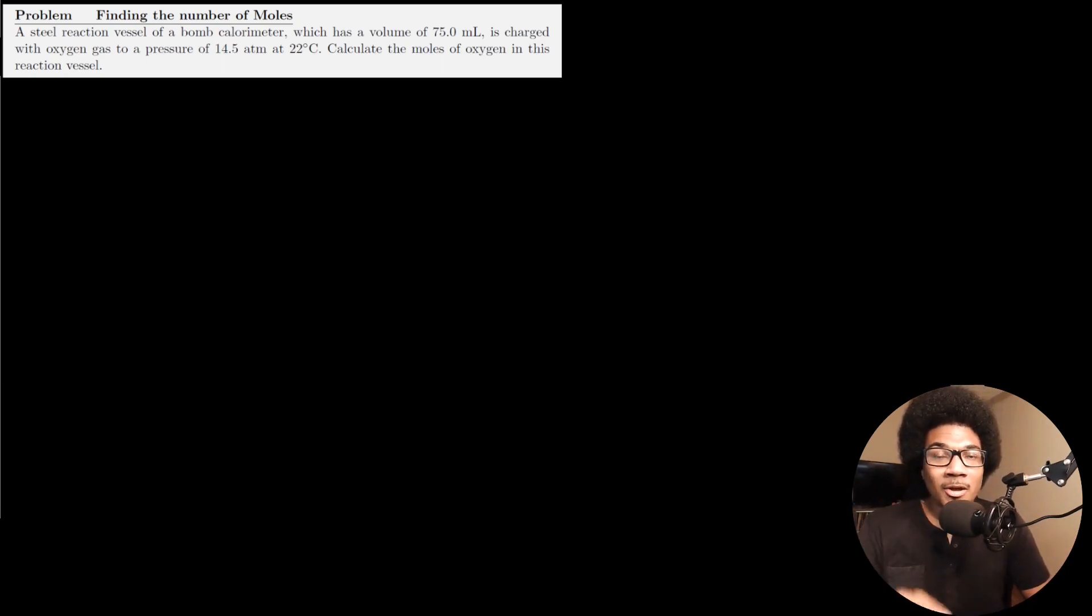You're given some properties of this gas sample, and it's asking you to calculate the amount of gas that's in the container. This becomes easy when you think about the ideal gas law. As we were doing with the fundamental gas law problems, let's first put out what we've been given. Write down everything that we've been given. What do we know about this gas? We know that its volume is 75 milliliters, we know that its pressure is 14.5 ATM, and we know that its temperature is 22 degrees C.